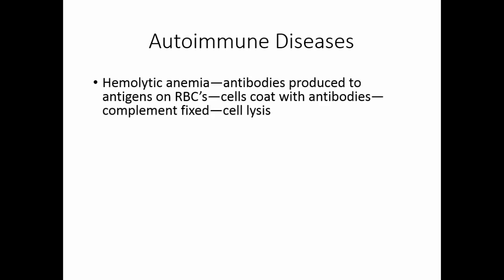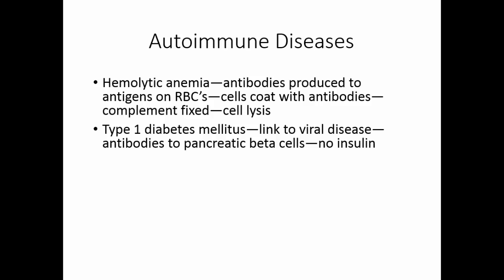Hemolytic anemia is one type of autoimmune disease. Antibodies are produced to antigens on red blood cells. As these antibodies coat the red blood cells, complement is fixed and this causes the lysis of the red blood cell. Type 1 diabetes mellitus has a link to a viral disease. Individuals who have type 1 frequently have a history of having had a viral disease a few months before. Here the antibodies produced go after the pancreatic beta cells — the cells that produce insulin. So these individuals lose the cells that allow them to produce insulin.